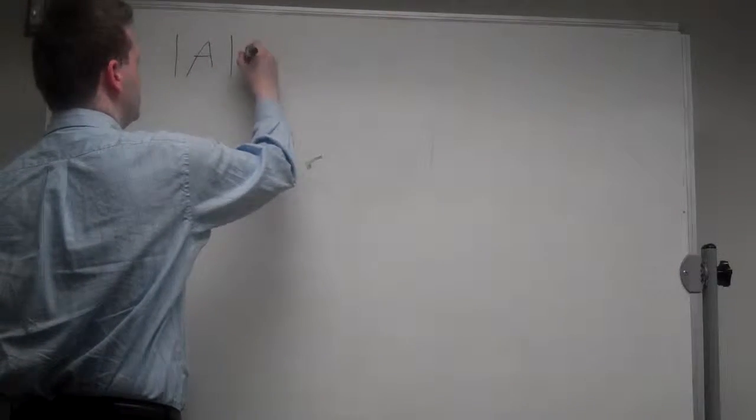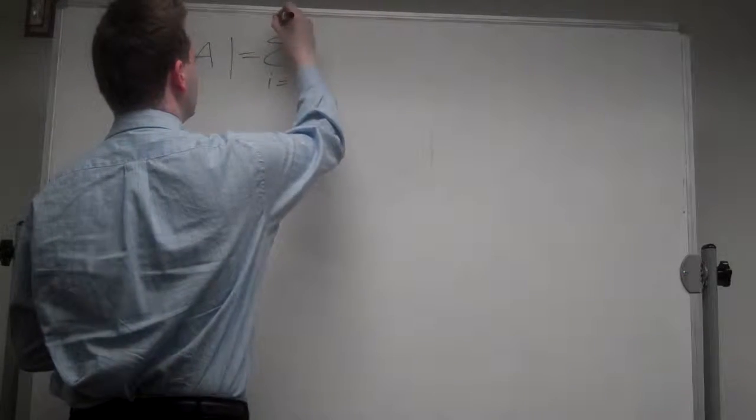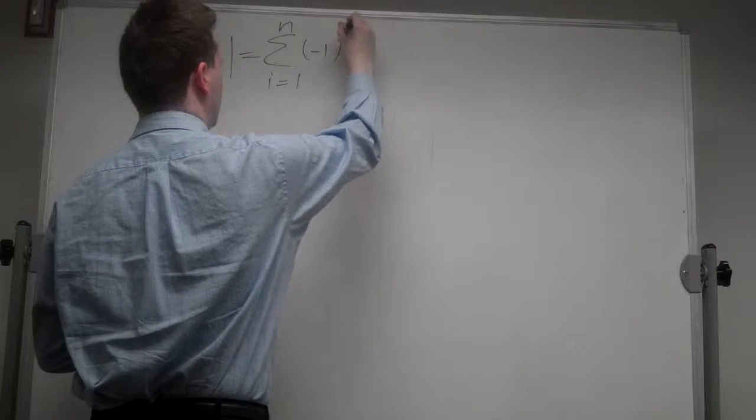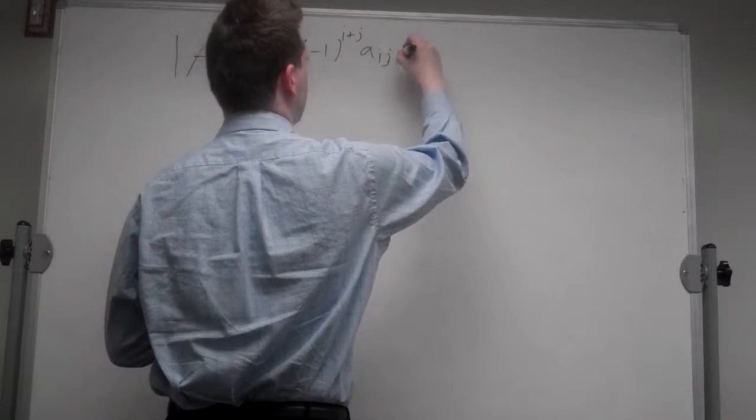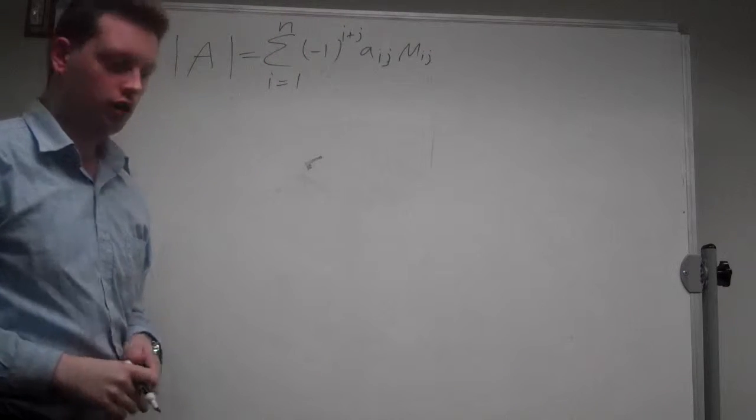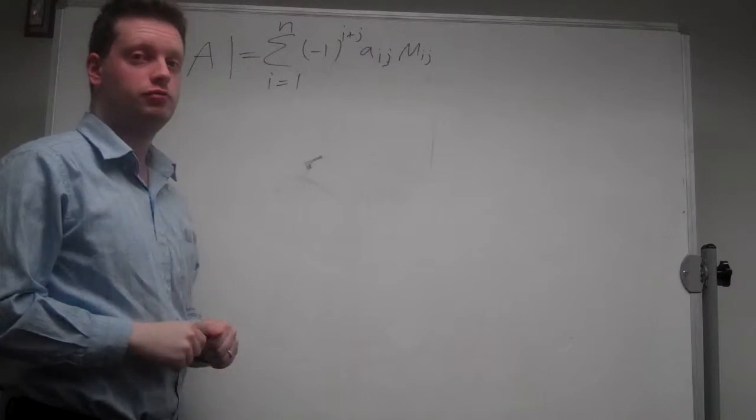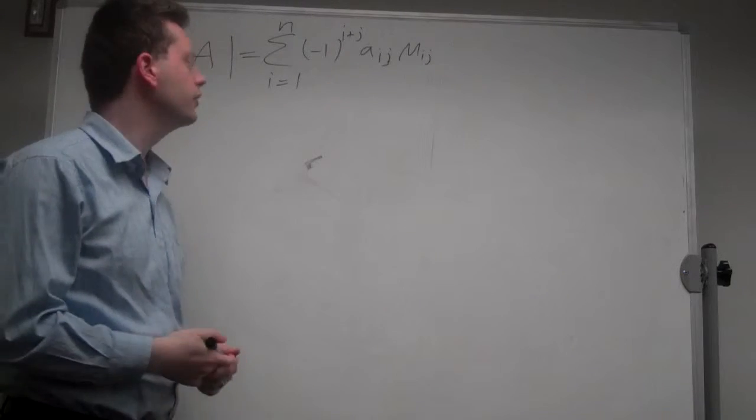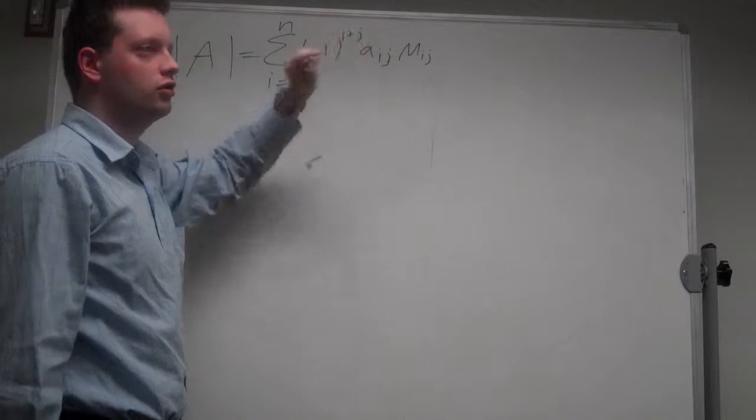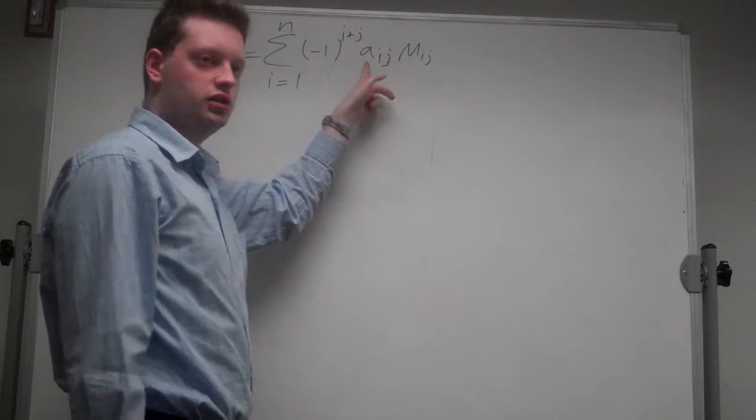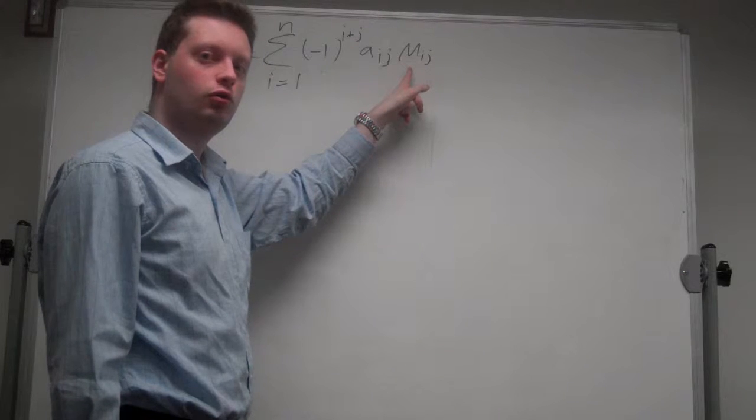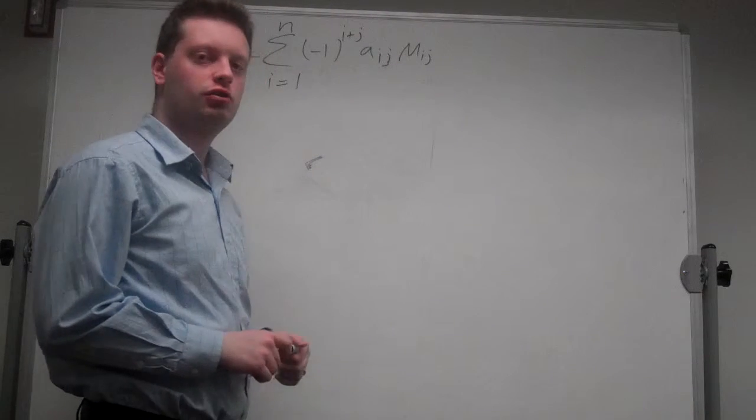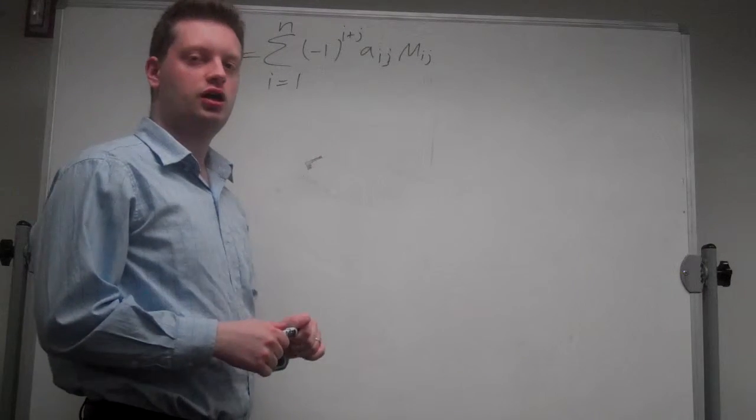Let's start with the formula. The determinant of A equals the sum from i equals 1 to n times minus 1 to the power of i plus j times a_ij times M_ij. Here i can be any row of the matrix and j is some fixed column. You have minus 1 to the power of the indices, the element a_ij times the minor M_ij, which is the determinant of the matrix if you delete row i and column j. Note that you can also flip these two indices, so i is a column and j is a row.